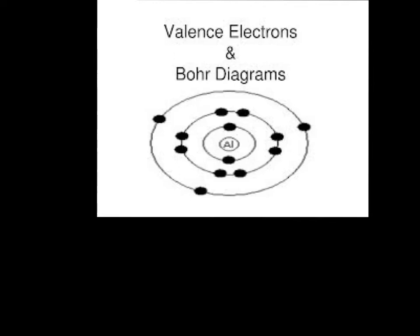But we're also going to be looking at valence electrons. Valence electrons, it's very simple, are the electrons on the outermost energy level. So here's a valence electron and here's a valence electron. They're on the outermost energy level of the atom.